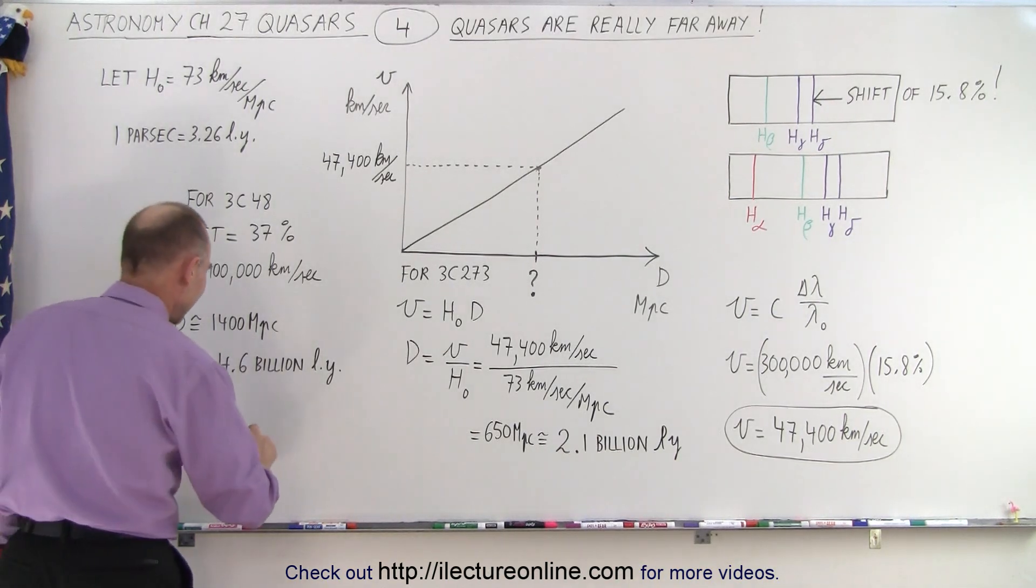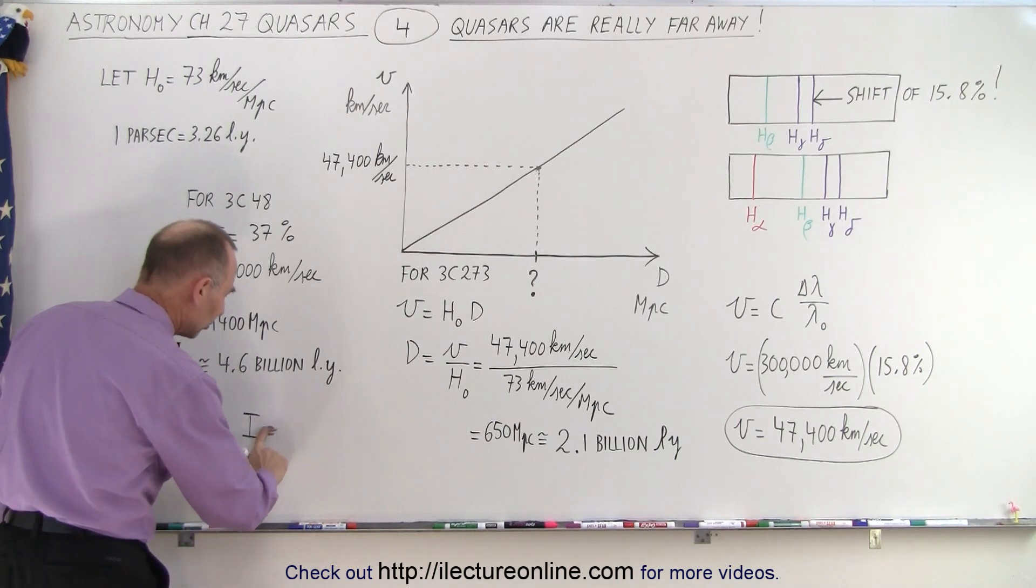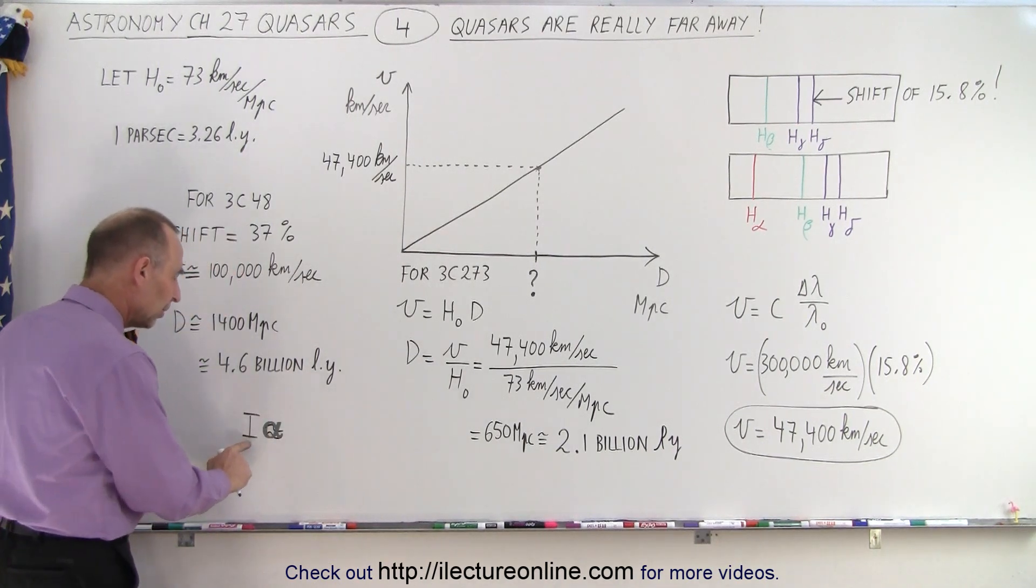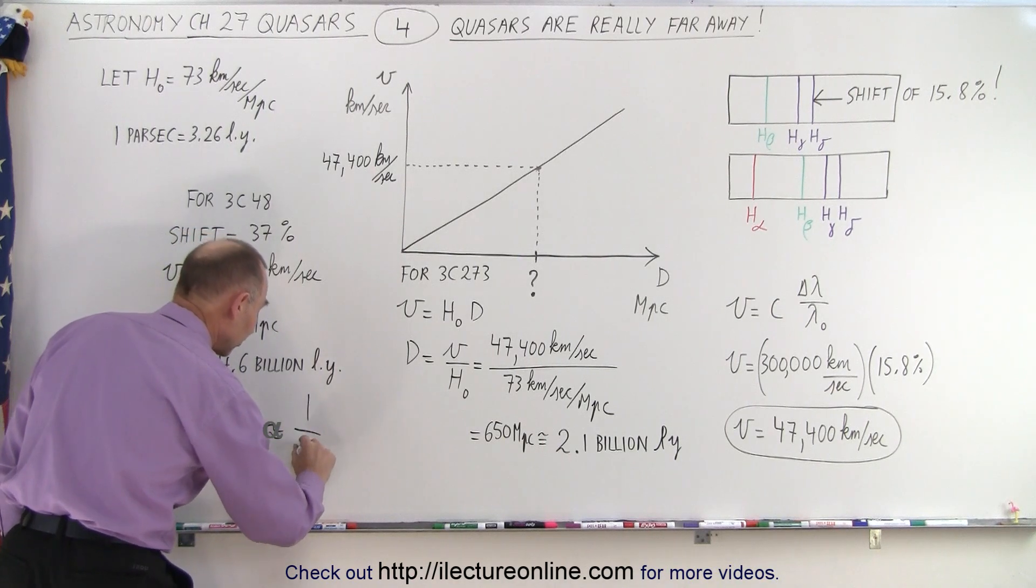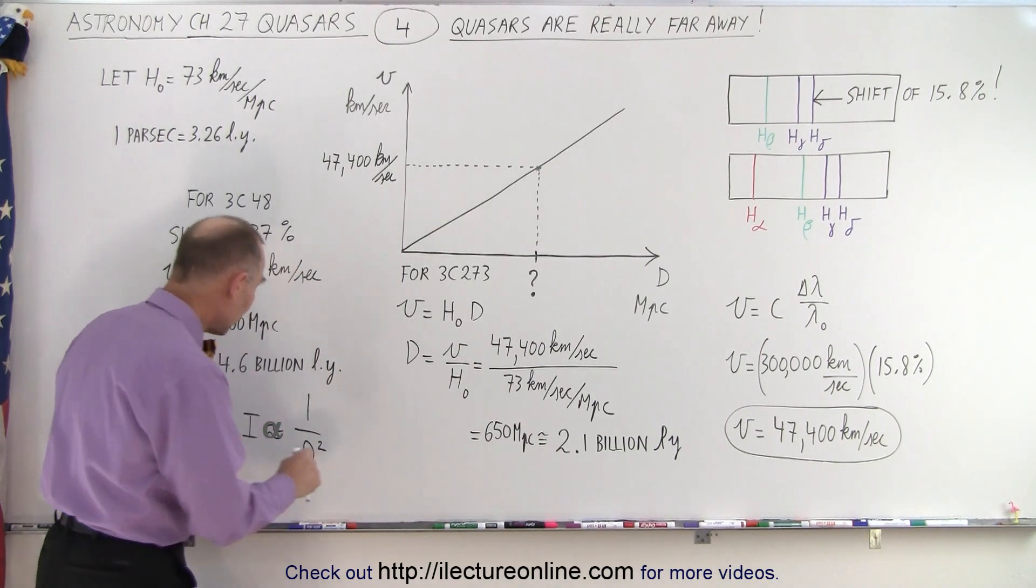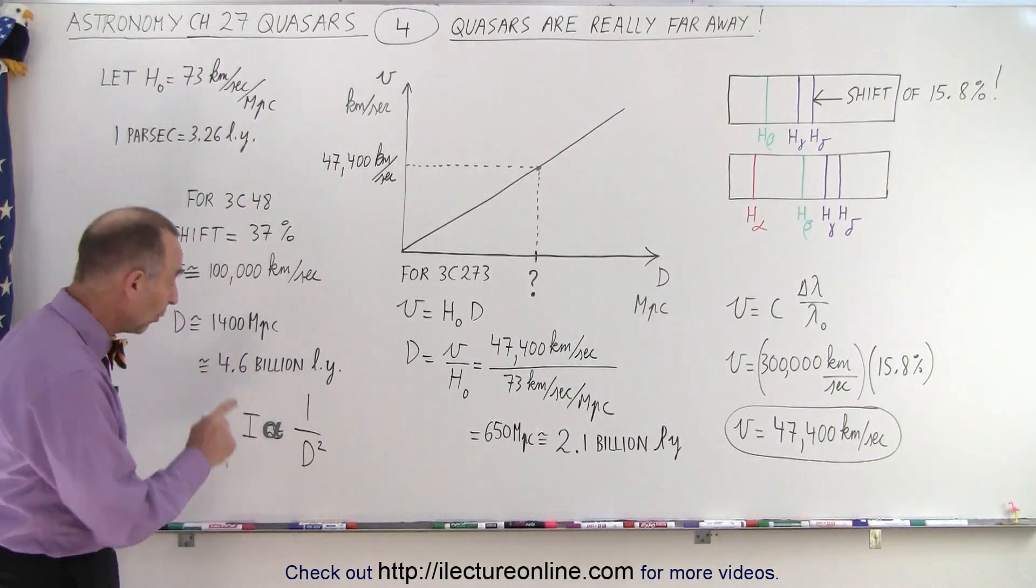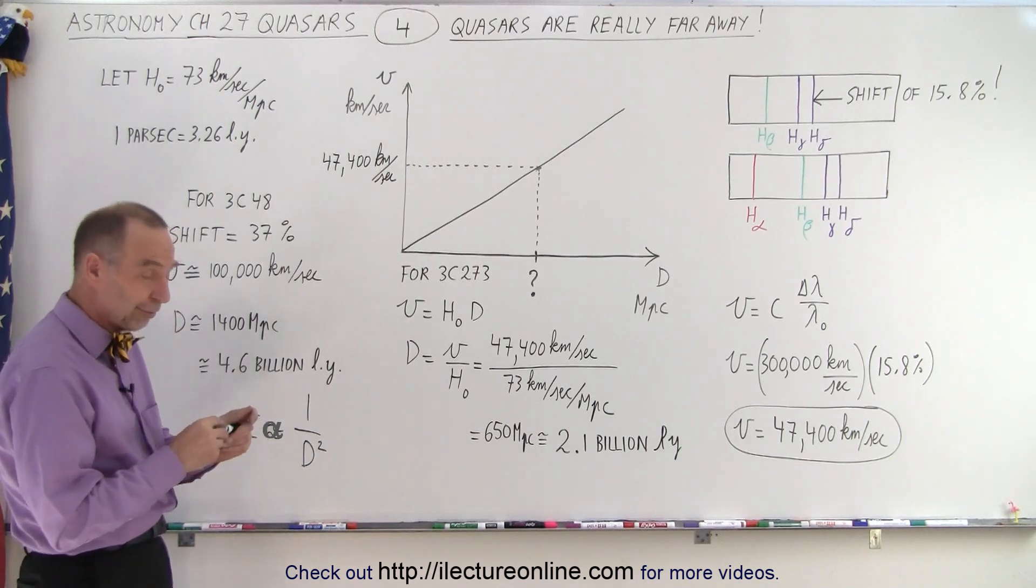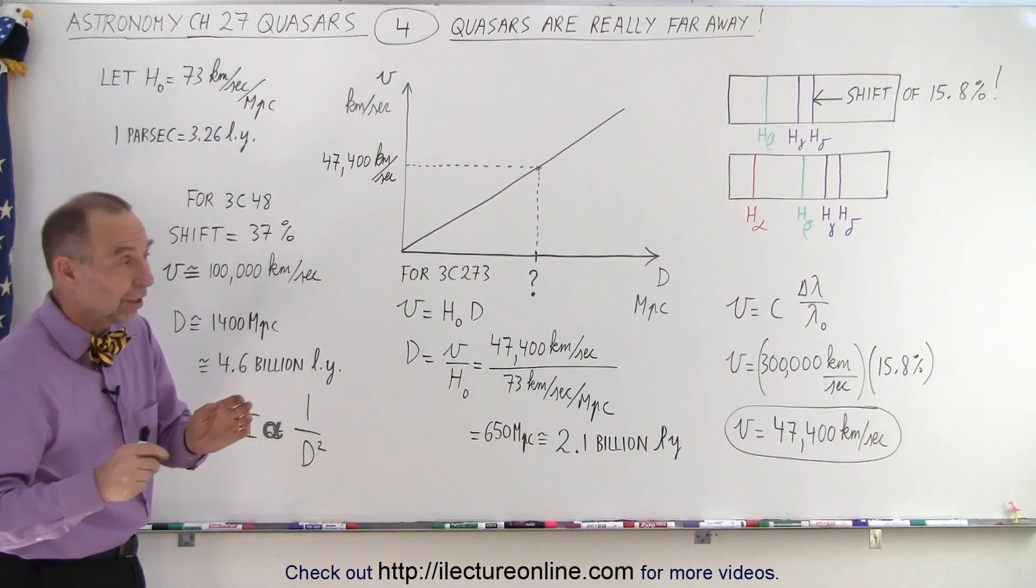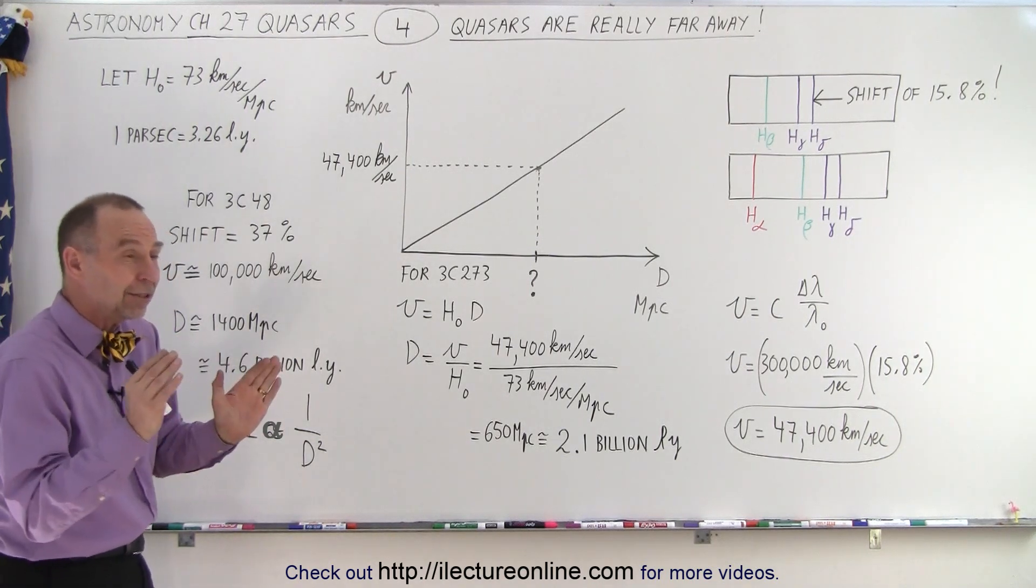Remember that the intensity of any signal that we see is proportional to 1 over the distance squared. So now if we plug in this enormous distance, and we square that, 1 divided by this enormous distance squared should be a tiny, tiny number. The signals from galaxies that far away should barely be noticeable. We should barely be able to detect them.